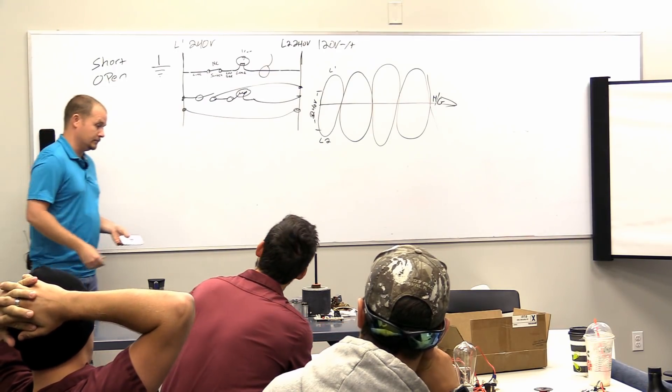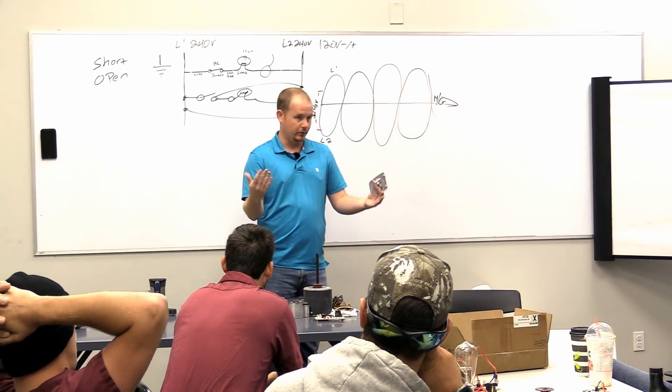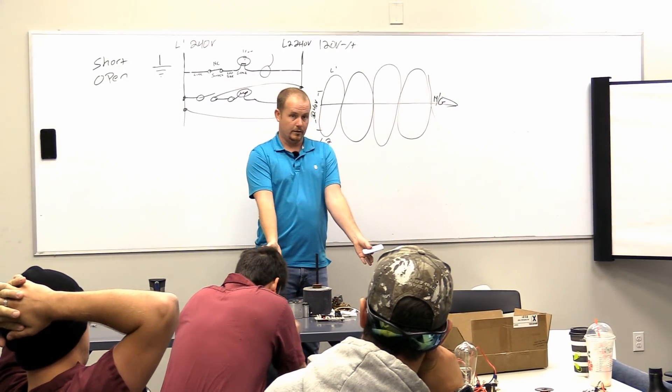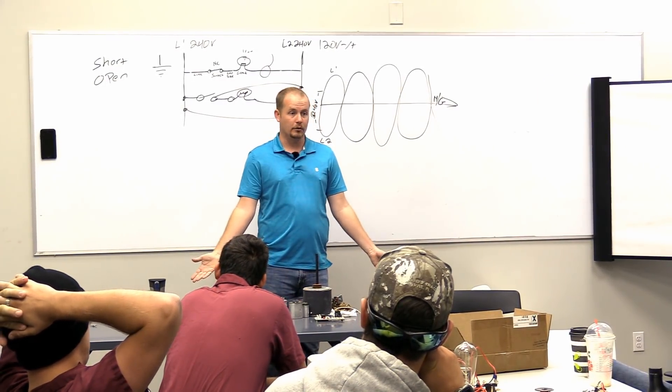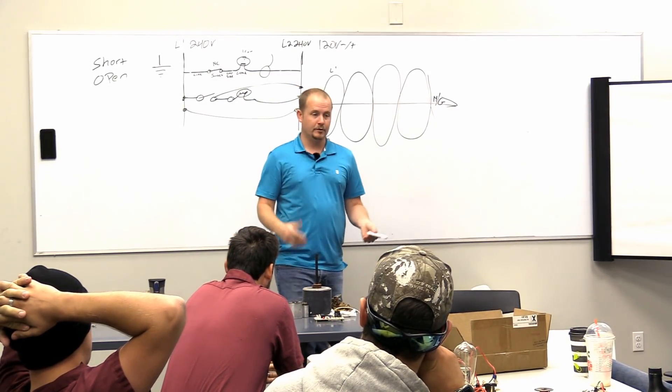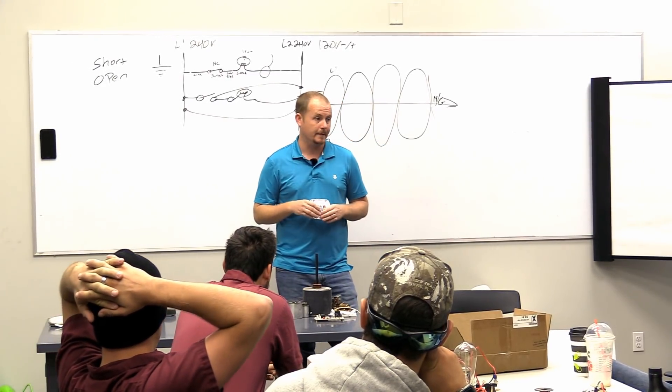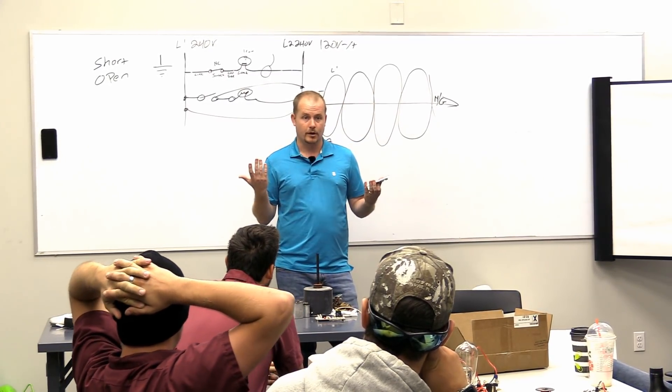So walk up to a motor. Power is applied. I'd say here we got 240 volts applied to the motor and it's not running. Is that an open or a short? That's an open. Walk up to a condenser. Breaker's tripped. Reset the breaker. Breaker trips again. Is that a short or an open? That's a short, right?